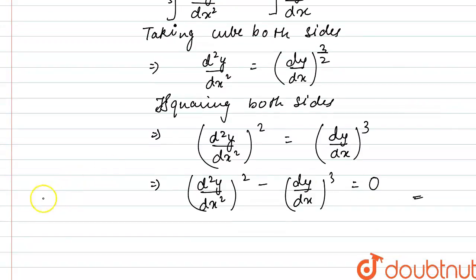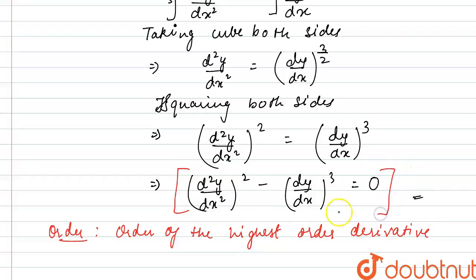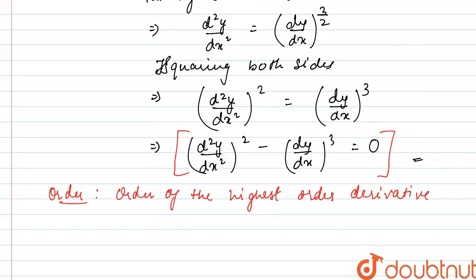Now, order of a differential equation is defined as the order of the highest order derivative. We need to see this differential equation. Highest order derivative present here is d2y by dx square, which is a second order derivative. So order for this differential equation is 2.